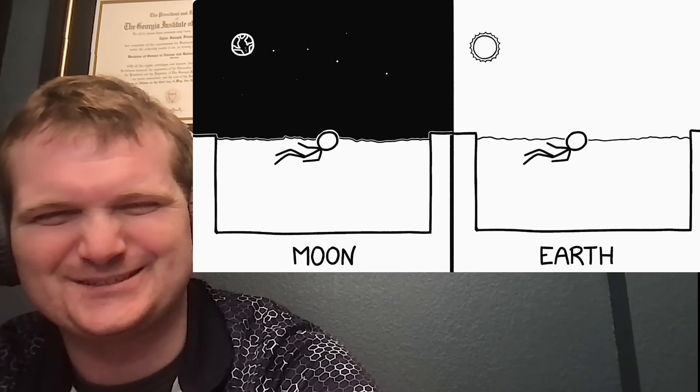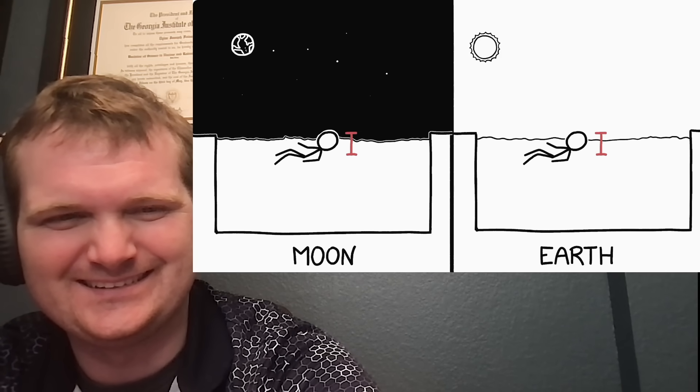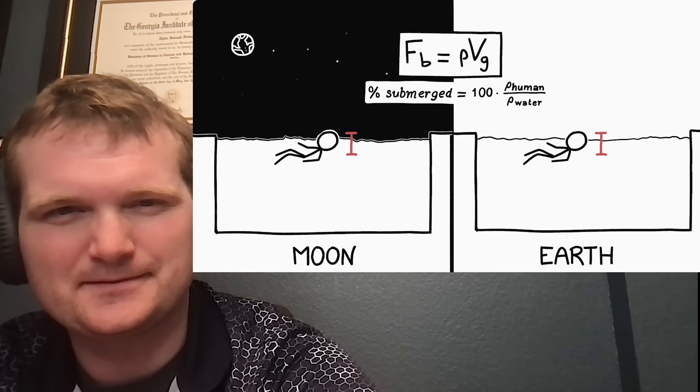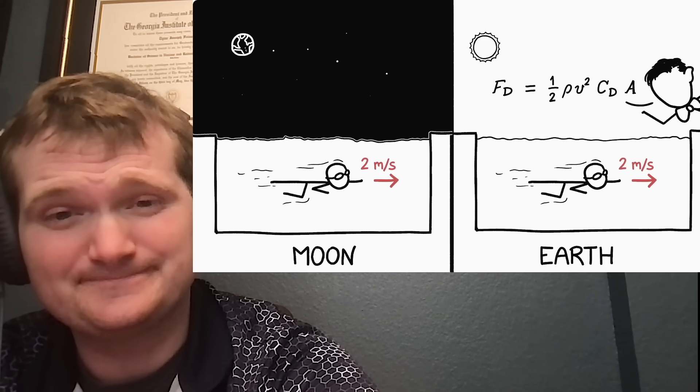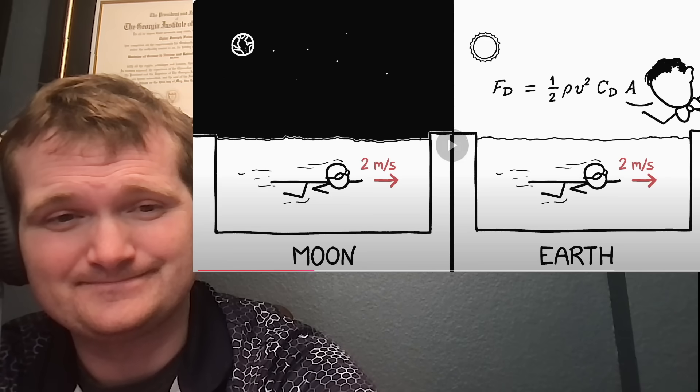Floating would feel about the same on the moon as on Earth, since how high in the water you float depends only on your body's density compared to the water's and not the strength of gravity. Swimming underwater would also feel pretty similar. The inertia of the water is the main source of drag when swimming, and inertia is a property of matter which is independent of gravity. The top speed of a submerged swimmer would be about the same on the moon as here, about 2 meters per second.